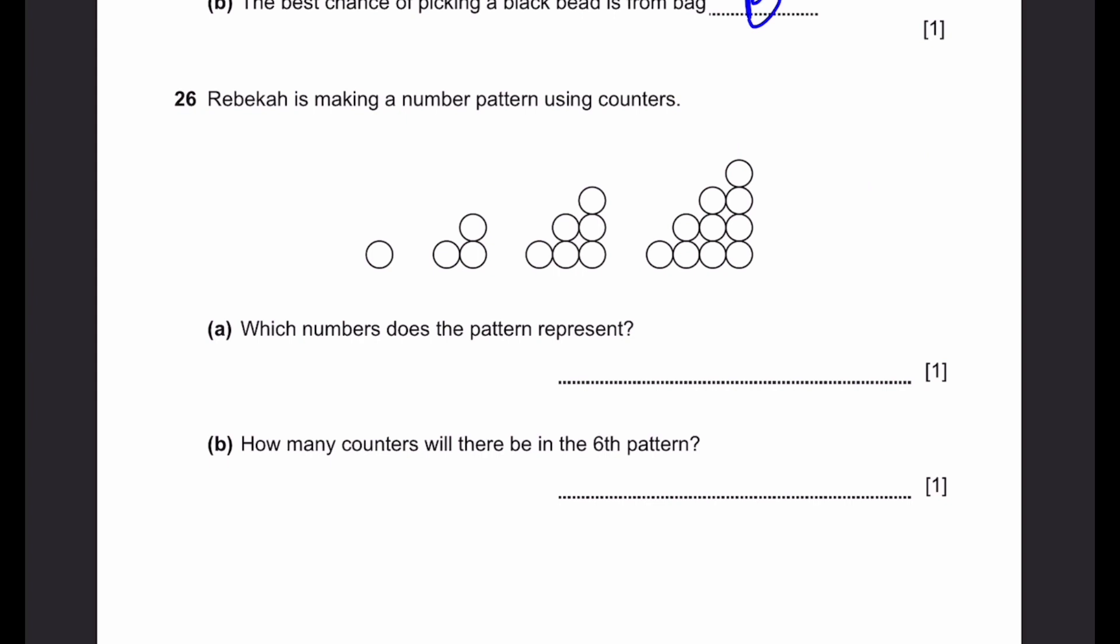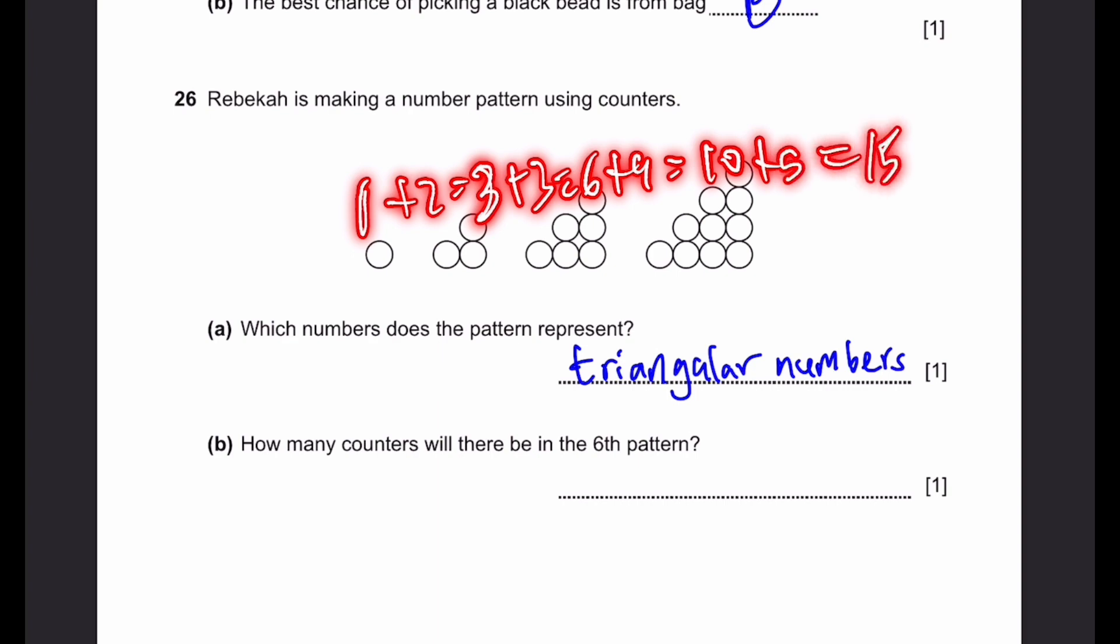Question 26. Rebecca is making a number pattern using counters. A. Which numbers does the pattern represent? You can see this is 1, 3, 6, 10. It goes on. These numbers are actually called triangular numbers. Because when we arrange them in dots like this, they form triangles. B. How many counters will be there in the 6th pattern? It will be 1. Add 2, we get 3. Add 3, we get 6. Add 4, we get 10. Next, we need to add 5 to get 15. That's the 5th one. Add 6 to get 21. That's the answer.